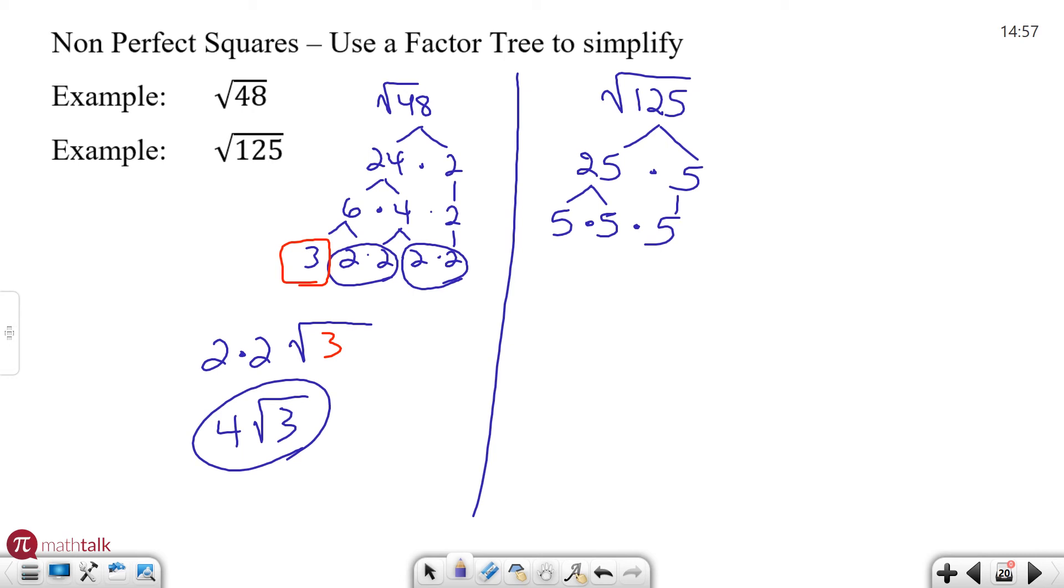Okay and so now I have three 5's. I can't go any further than that. I want to look for pairs of numbers. So I have a pair of 5's here and then I have a solo 5 all by itself. So I'm going to take one number from the pair, put it on the outside of my square root and I'm going to take any number that's left inside not paired and put it back inside. And so I can't do anything else with this. The square root of 125 is really the same thing as 5 root 5 or 5 square root 5.